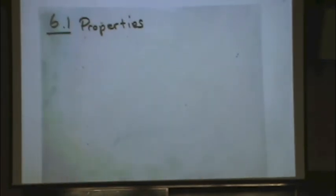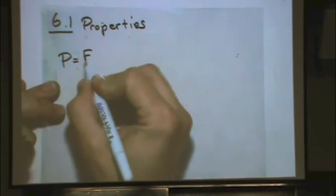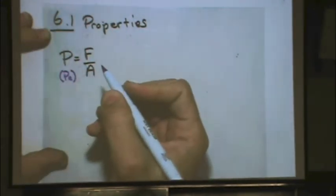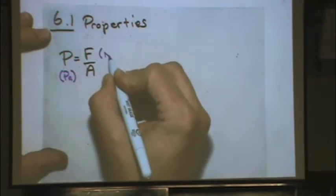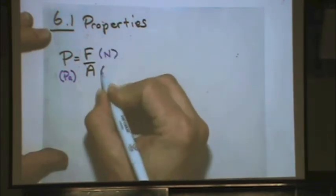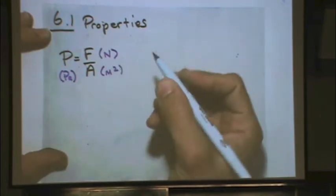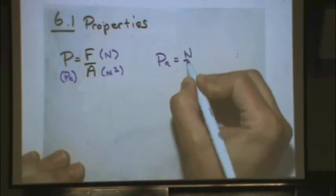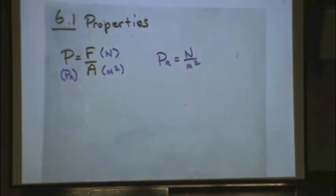Let's write a formula you might have seen in physics: pressure is force per unit area. The SI unit of pressure is the Pascal. Force is measured in Newtons and area in meters squared, so a Pascal is a Newton per meter squared. As the area gets smaller, the pressure goes up.